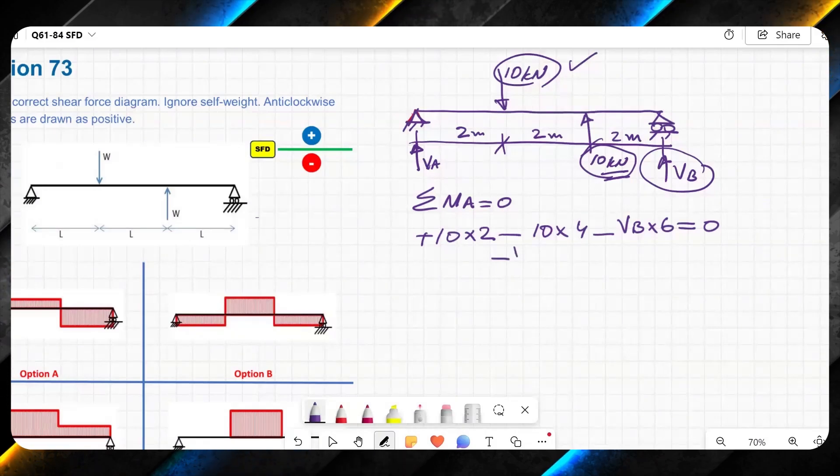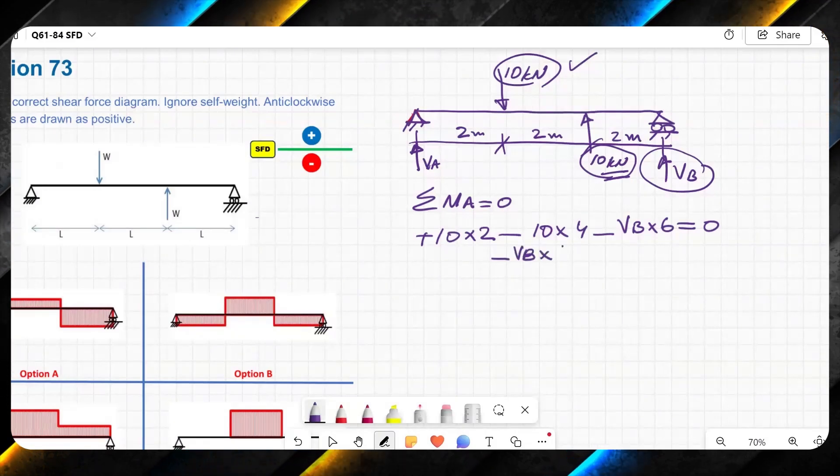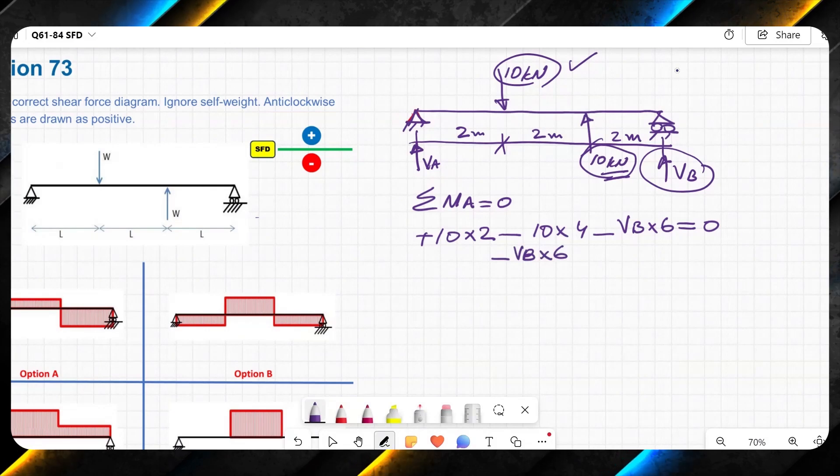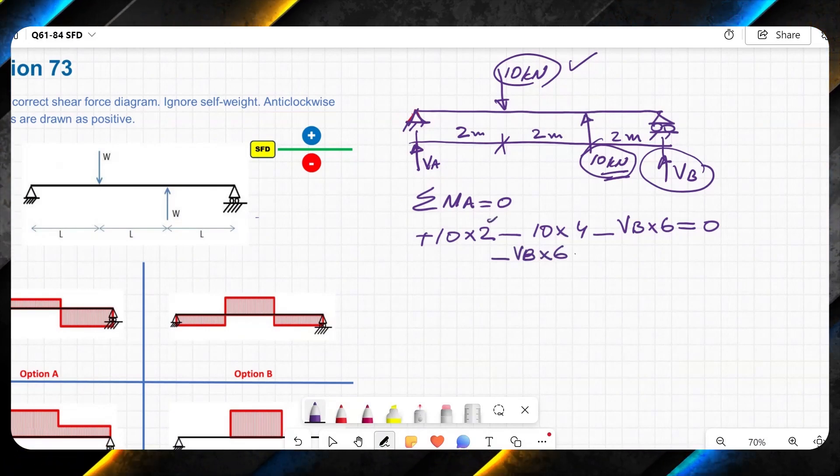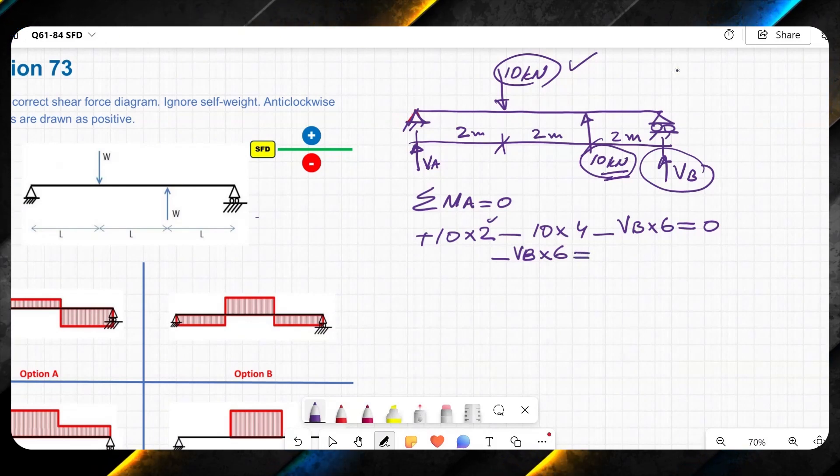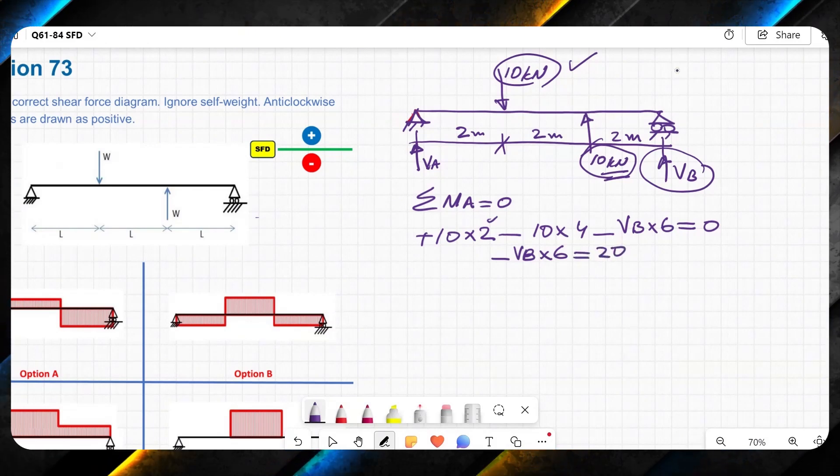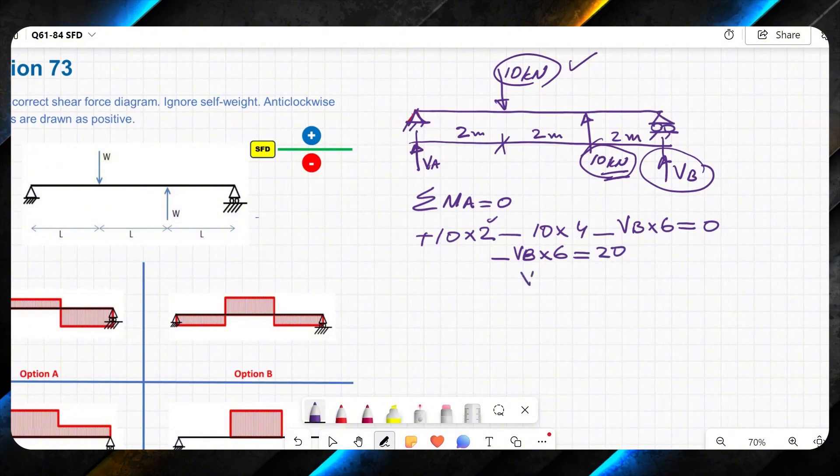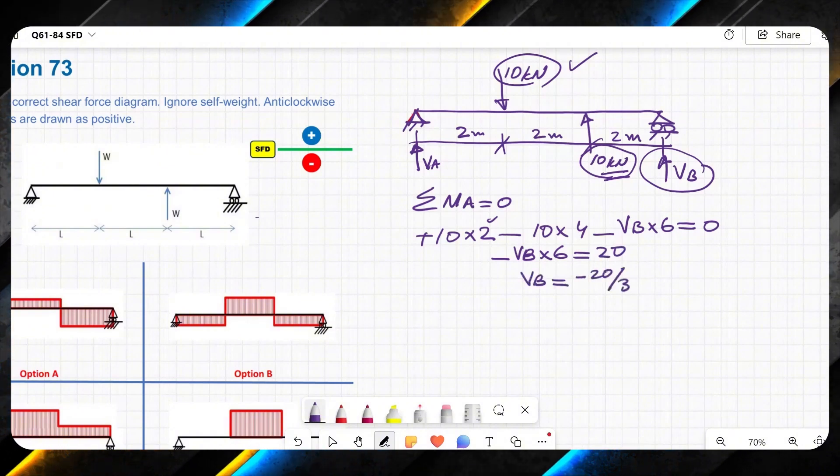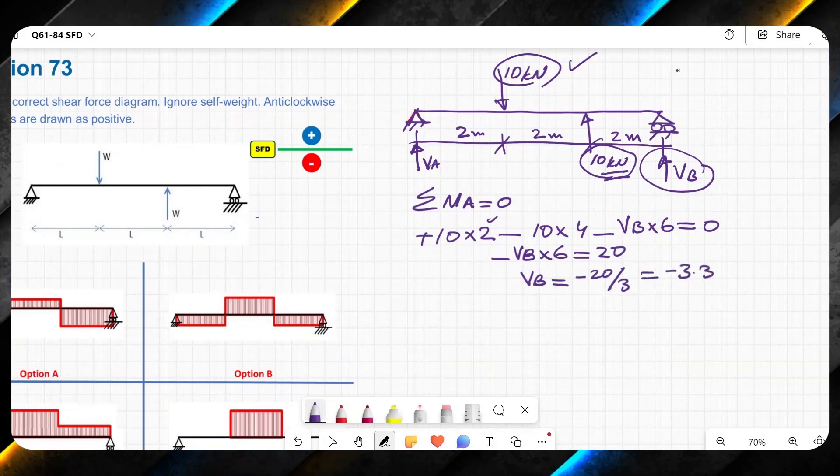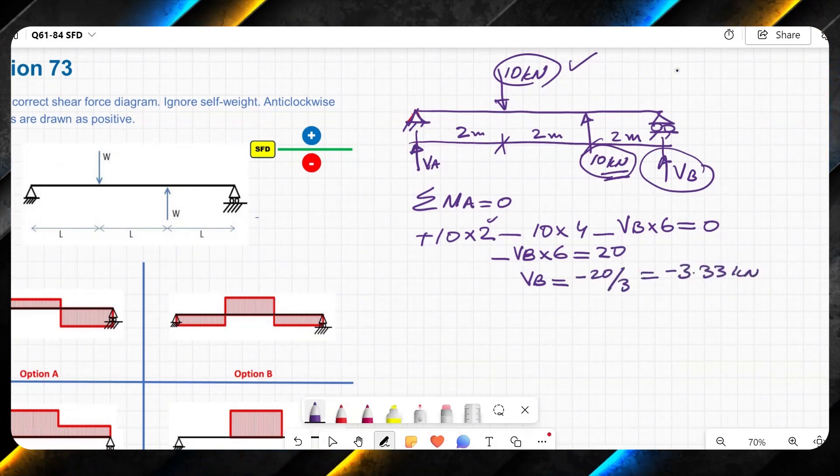This will be equal to minus VB times 6, minus 40, take away plus 20, it will be minus 20. If I bring it on the other side, it will be plus 20. So VB will be equal to minus 20 divided by 6, which is minus 3.33 kN.